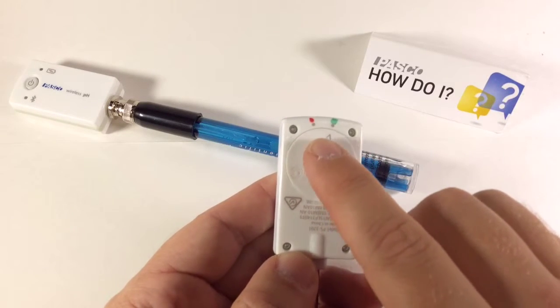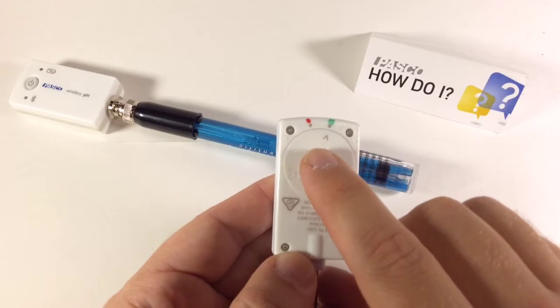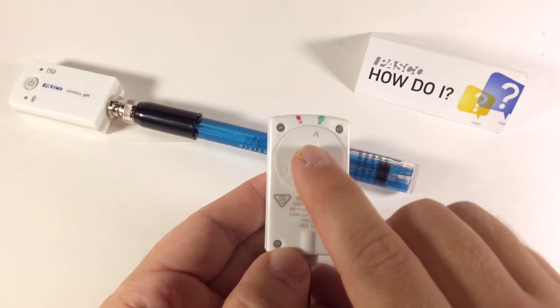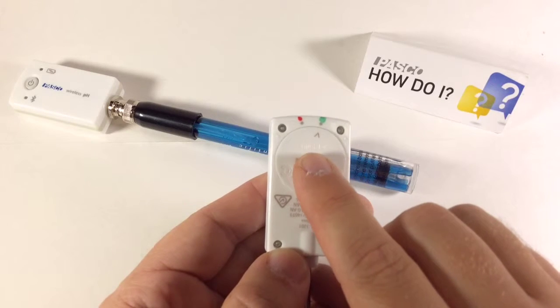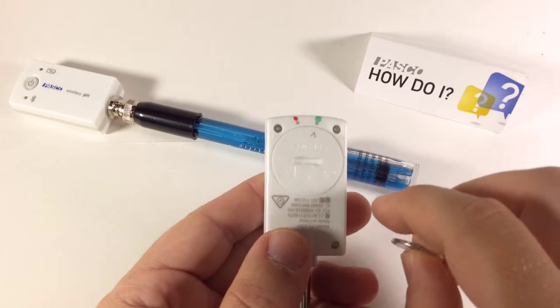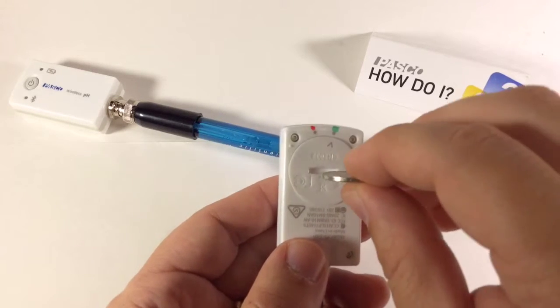There's an arrow that's pointing to one of two dots. I've marked my dots red and green, so you can see them a little more clearly. Currently, the arrow is pointing to the dot on the right, the green dot in this case, and that shows that the battery compartment is closed and sealed.